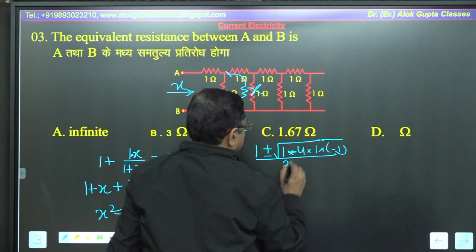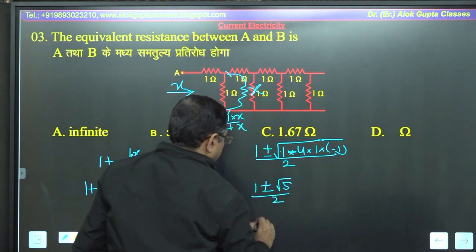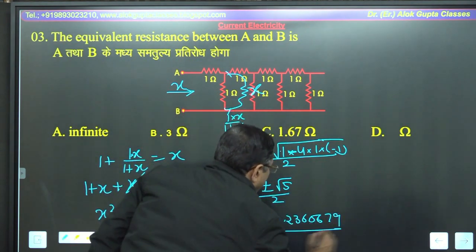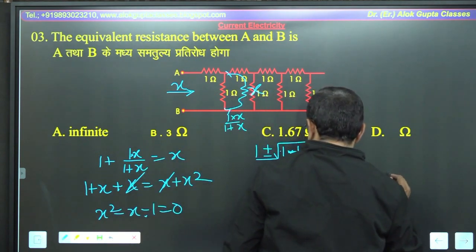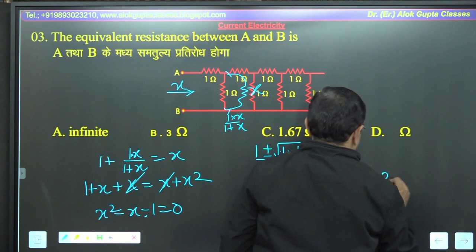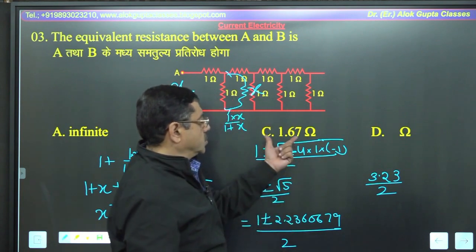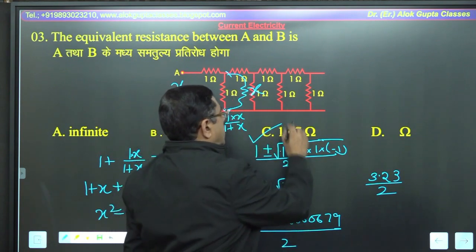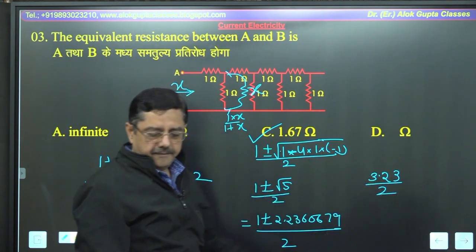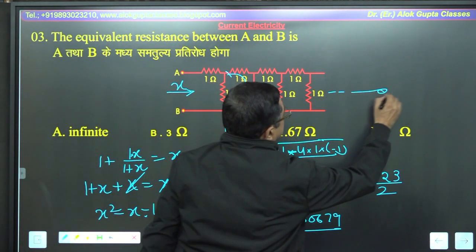Transfer to the right hand side: x² - x - 1 = 0. x = (−1 ± √(1 + 4))/2 = (−1 ± √5)/2। root 5 की value कितनी? 2.2360679 — divided by 2। Plus sign लेंगे तो: 2.236 + 1 = 3.236, divided by 2 = 1.62 के आसपास। तो correct answer यह होता है — C answer is correct। Exactly यह ही value है — इस तरह से solve करते हैं अगर यह infinity तक जाता तब।